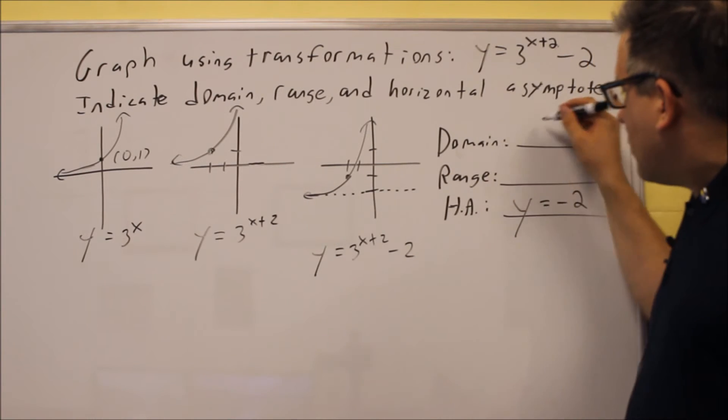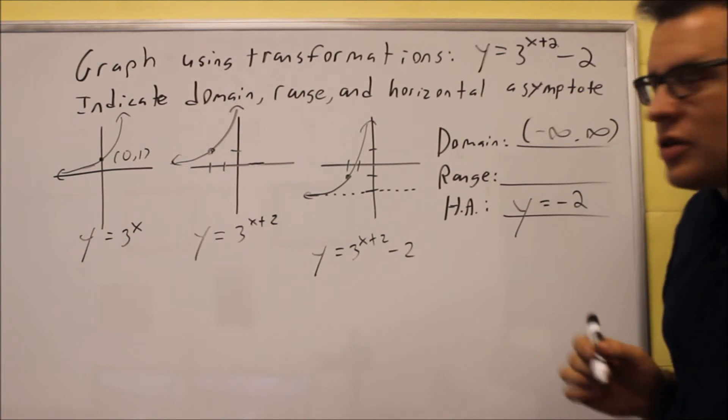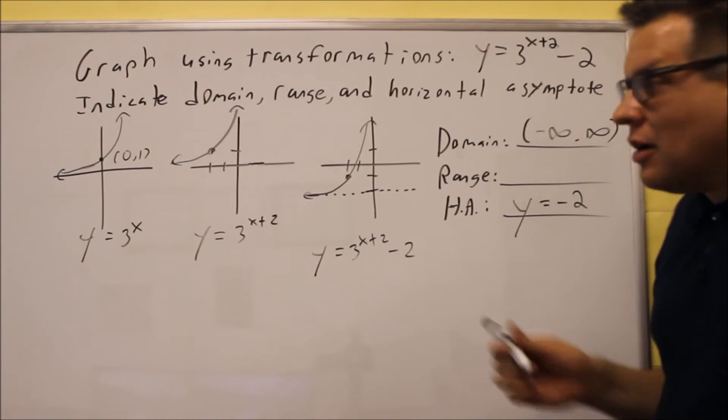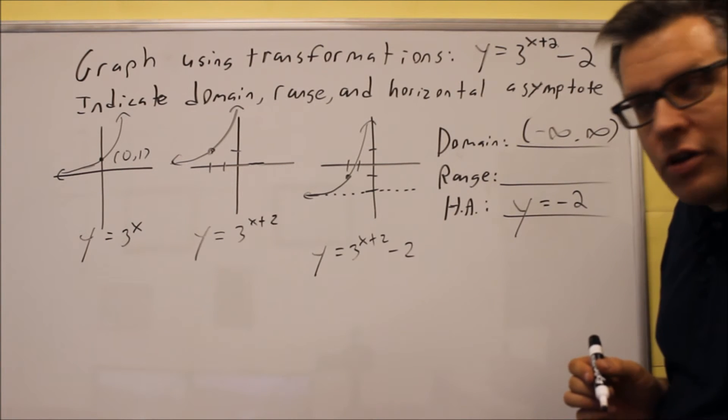Now your domain, it's still going to be negative infinity to positive infinity. In fact, all the problems you're going to do in this section, if they have an exponent like that, they're all going to be negative infinity to positive infinity because there's no restrictions on what x value you can put in there.